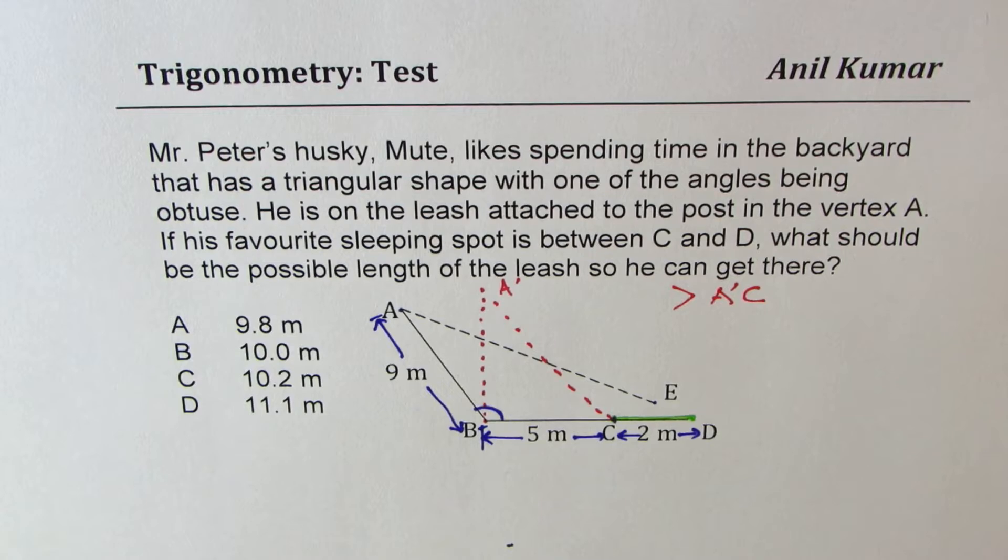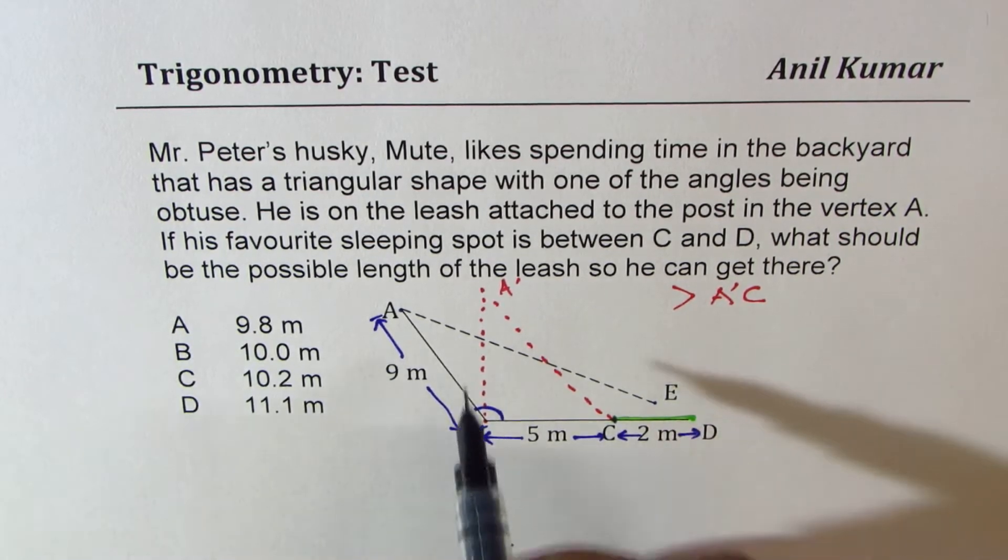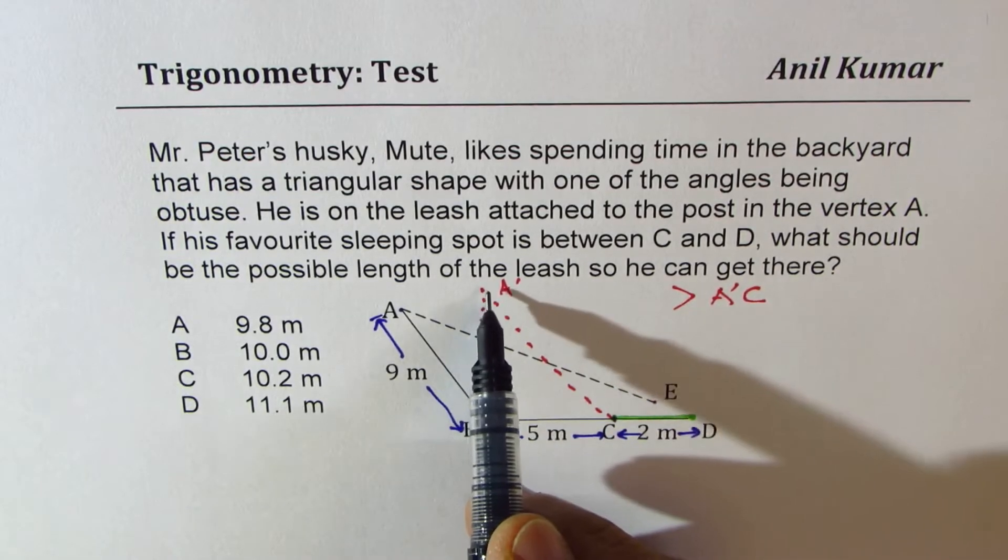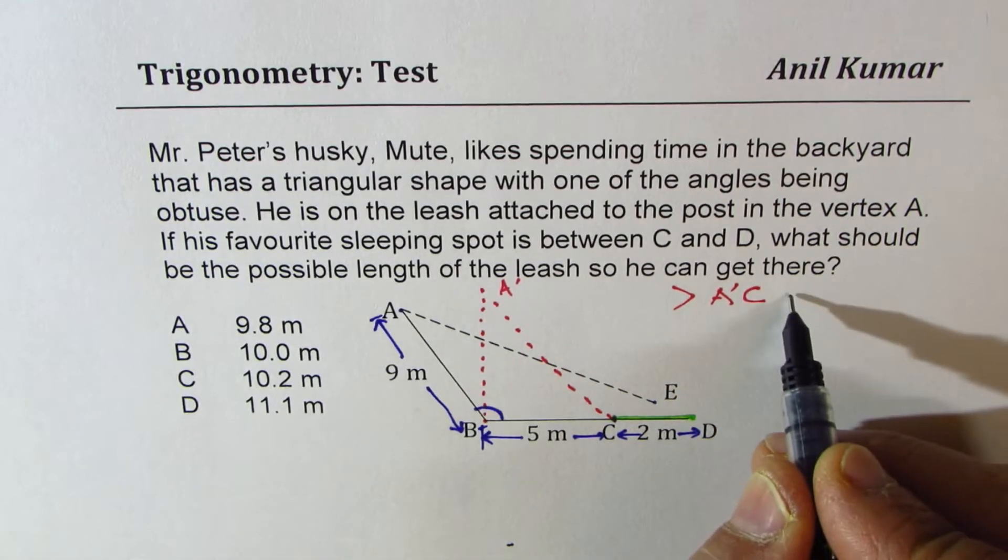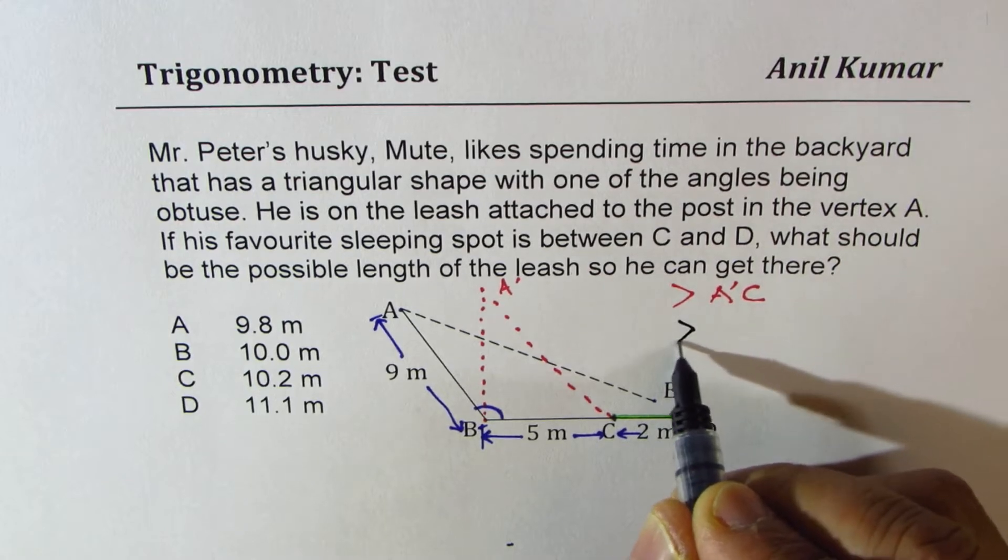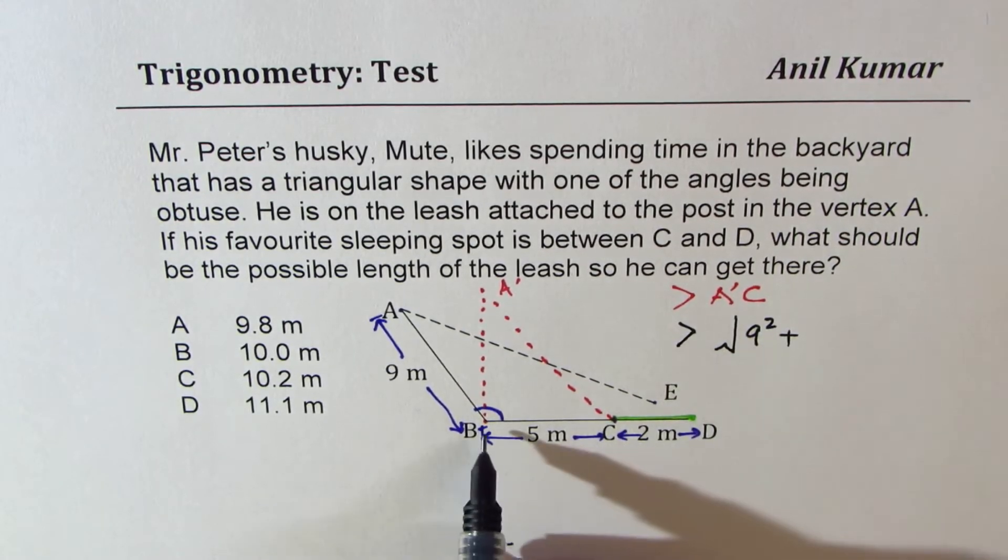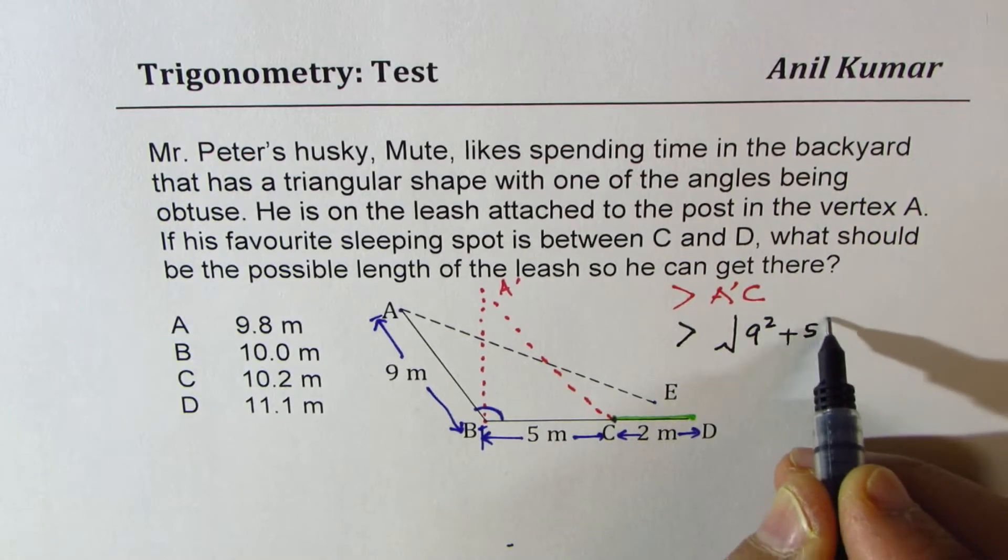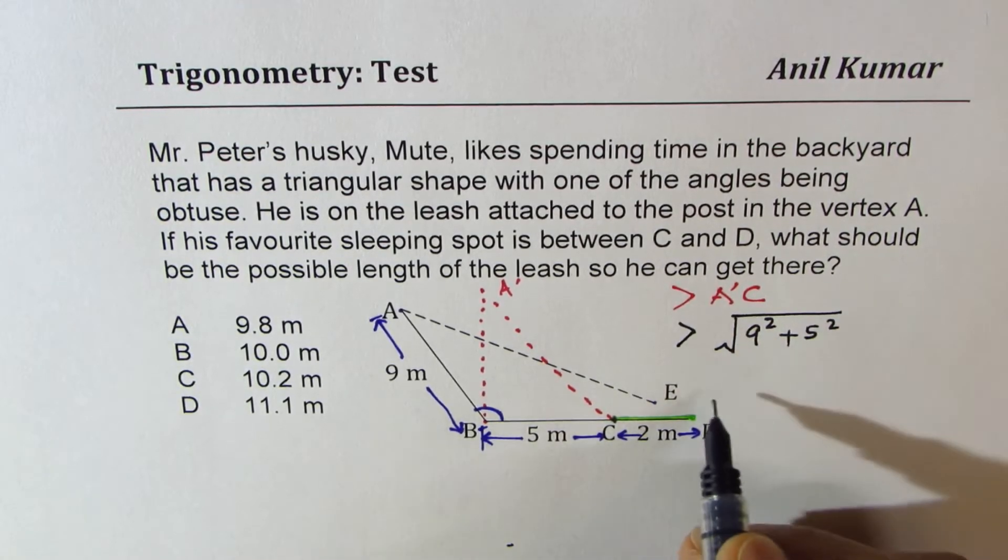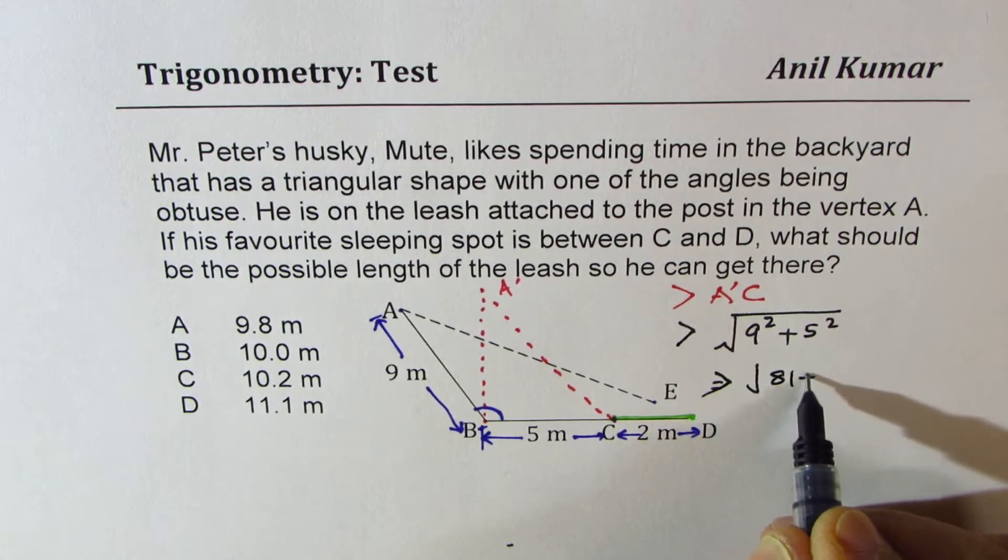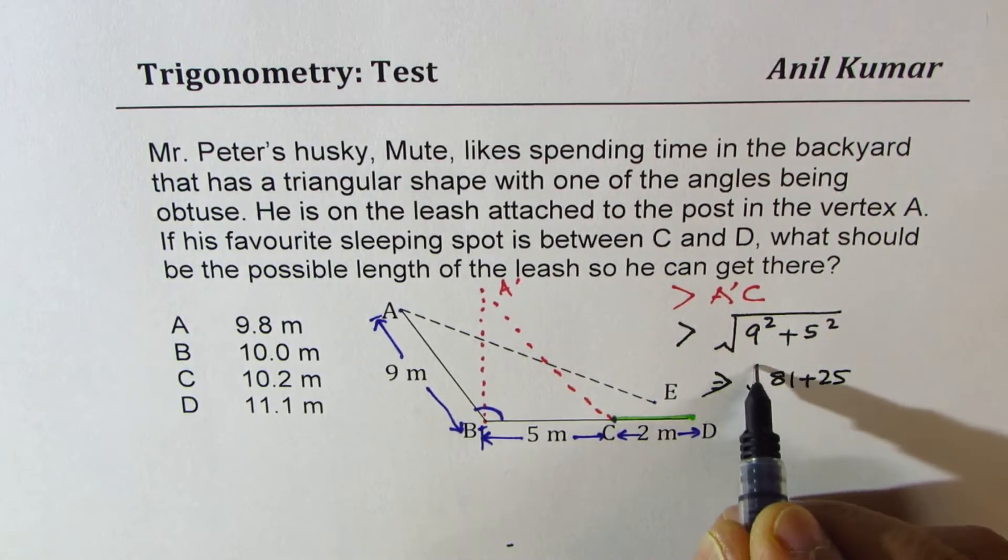Now let's find what is A dash C equal to. If it is a right triangle, in that case A dash B is 9 meters. So it has to be greater than square root of 9 square plus BC is 5, plus 5 square. That means it is much greater than square root of 81 plus 25. This is more than 100.